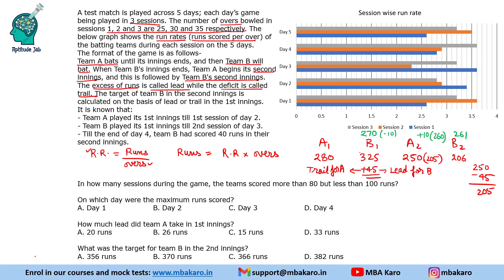Now let us read the further data and solve the questions. Team A played its first innings till the first session of day 2, and team B played its first innings till the second session of day 3. Till the end of day 4, team B had scored 40 runs in their second innings. Based on this data and the graph, we need to answer the questions. Session 1 has 25 overs, session 2 has 30 overs, and session 3 has 35 overs.